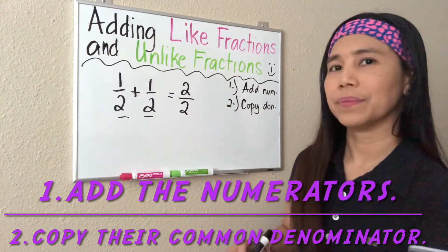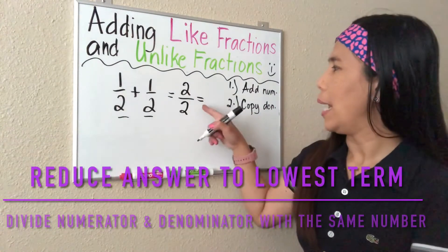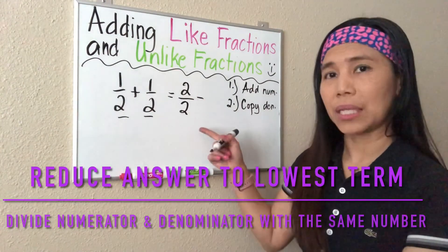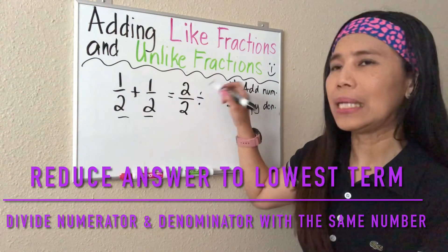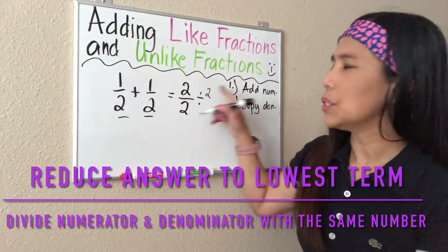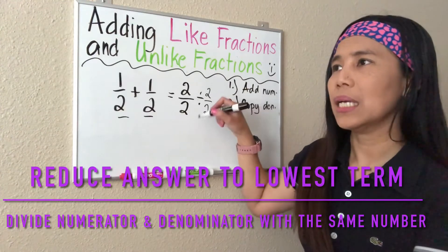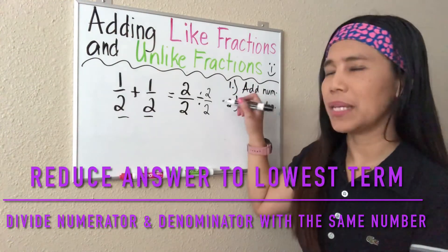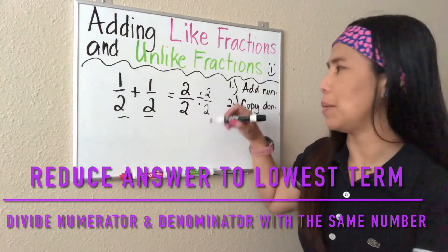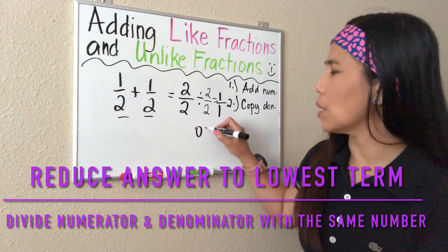We now have two-halves. If it is necessary, we have to reduce that to lowest terms. To reduce to lowest terms, we divide. We think of a number that if we divide both the numerator and denominator, it will give us an exact answer. Two divided by two gives us one, and two divided by two also gives us one, which is equal to one whole.